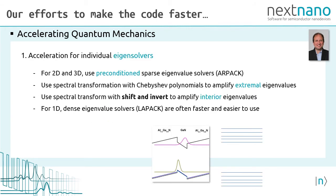For 2D and 3D simulations, we use a preconditioned sparse eigenvalue solver such as ARPACK. If we solve the Schrödinger equation for the conduction band in a single band approximation or for holes in a six band k dot p model, we are interested in calculating extremal eigenvalues at the edge of the spectrum. Here we use a spectral transformation that amplifies the extremal eigenvalues at the band edge.